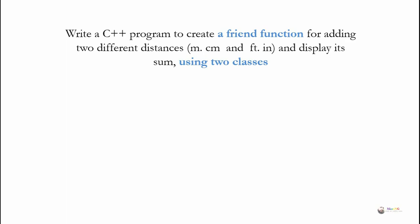Write a C++ program to create a friend function for adding two different distances and display its sum using two classes. Here we are representing distances in two different forms: one class with meter and centimeter, and another class with feet and inch.